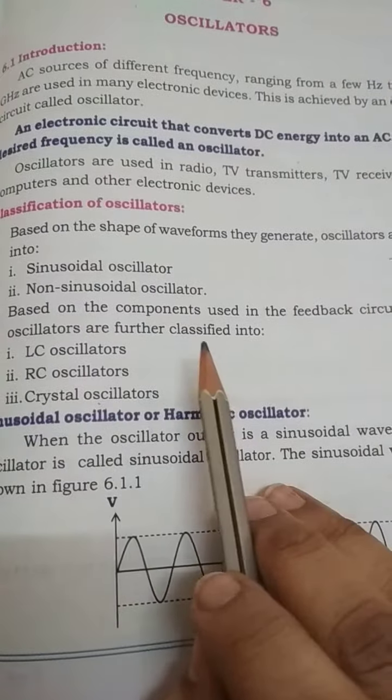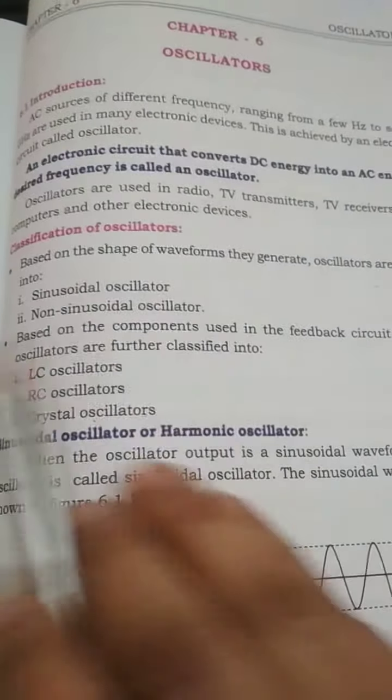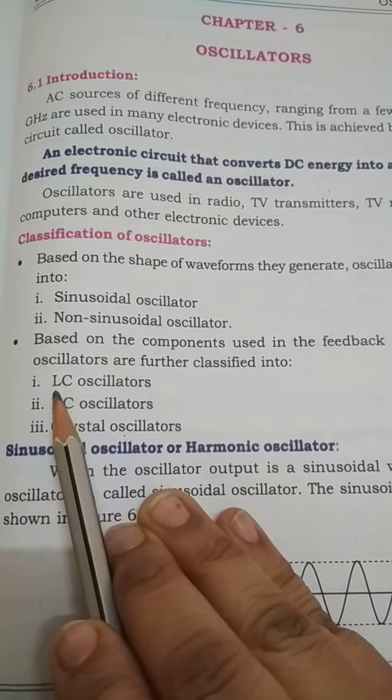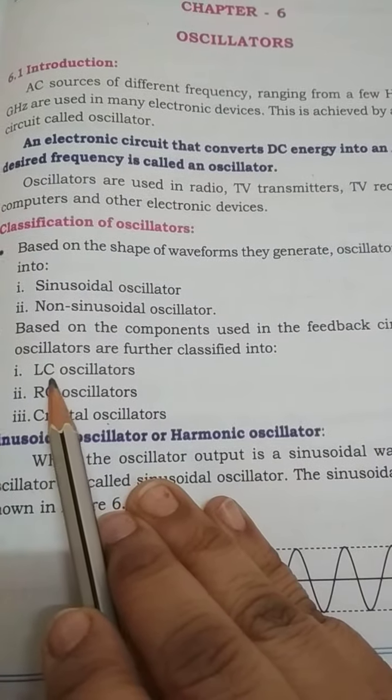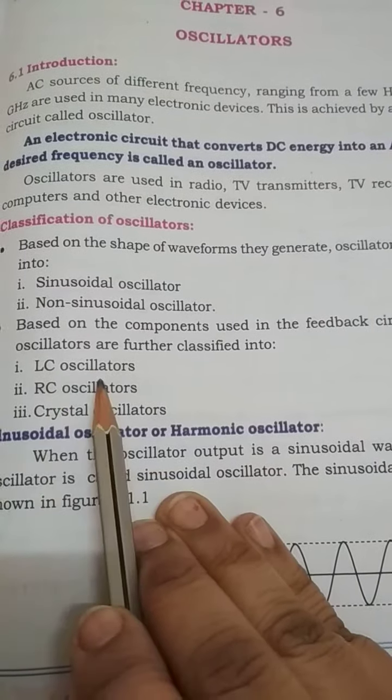Based on the components that are used in that circuit, if L and C - L means inductor, C means capacitor - if L and C components are used then they are called as LC oscillator.